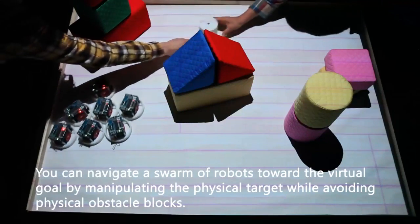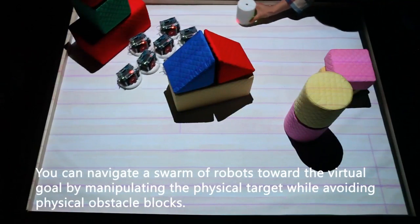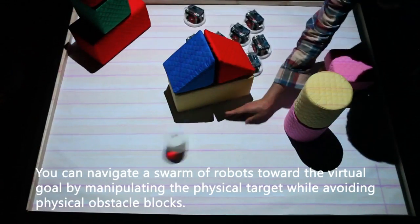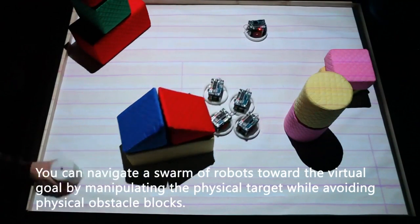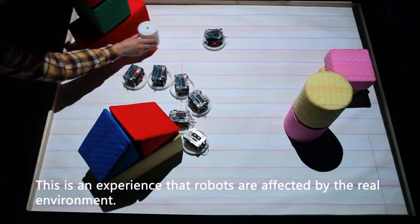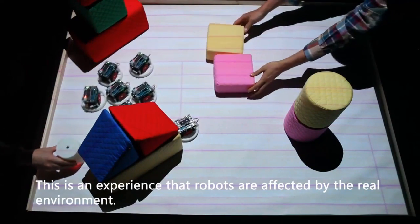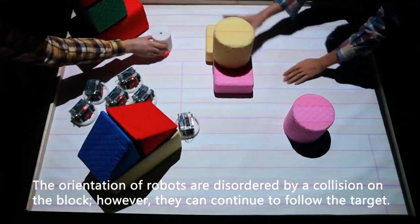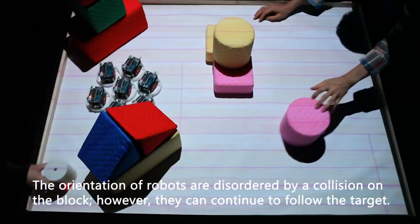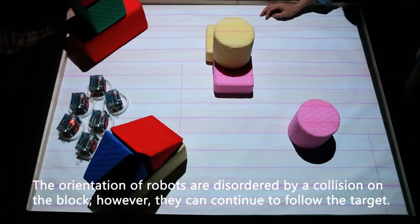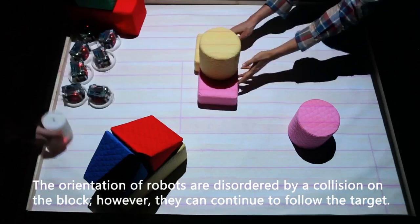You can navigate a swarm of robots toward the virtual goal by manipulating the physical target while avoiding physical obstacle blocks. This is an experience that robots are affected by the real environment. The orientation of robots are disordered by a collision on the block; however, they can continue to follow the target.